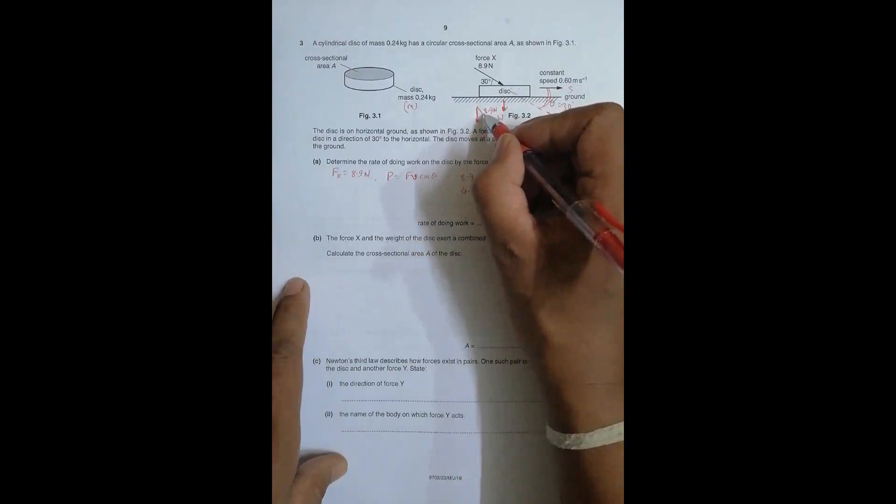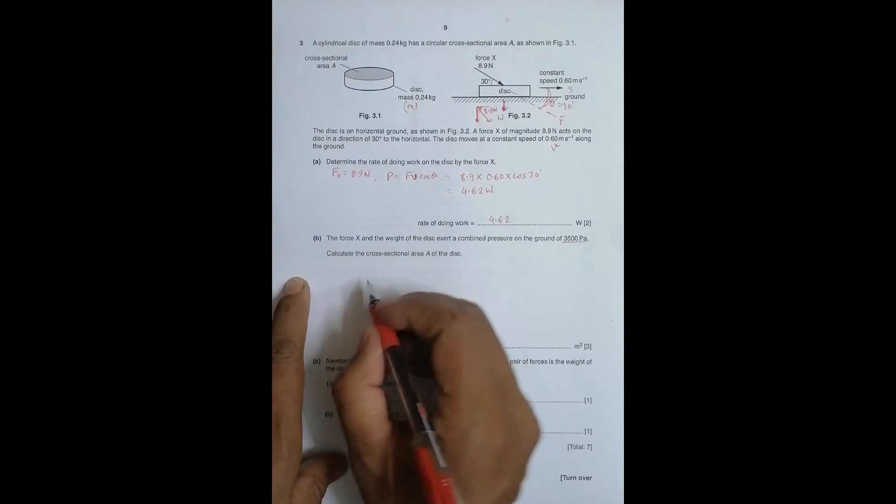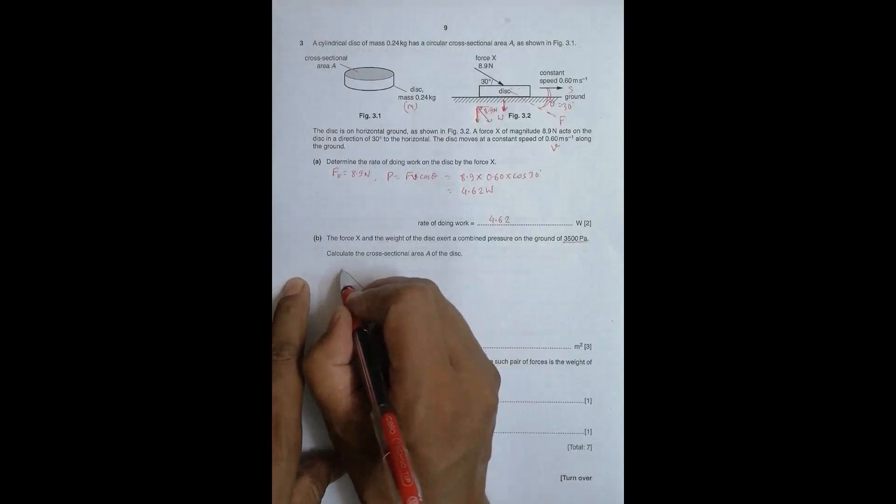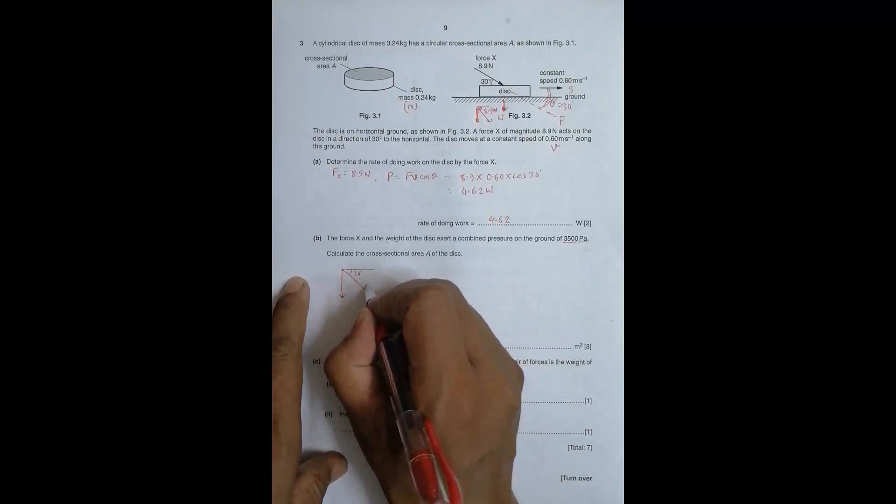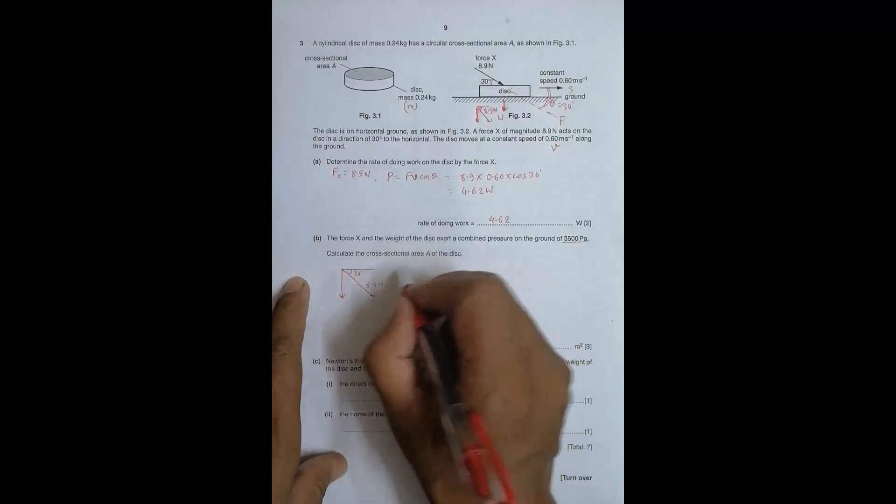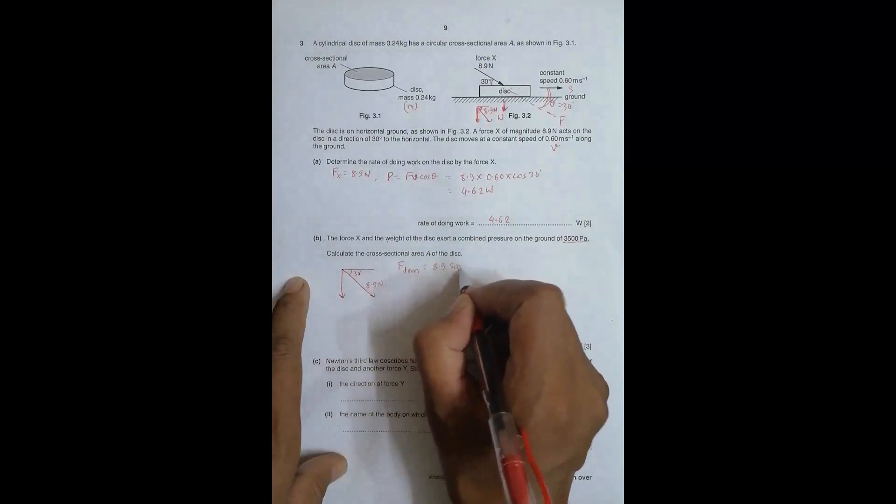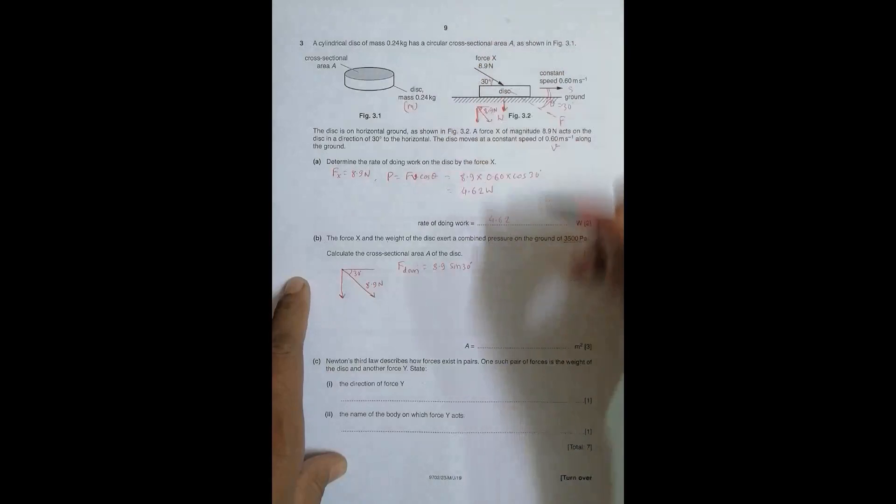This is 8.9 N. Let me draw it here - this is force X. We are given this angle of 30 degrees, so I have to find this component, the downward component. So this force downward due to X = 8.9 × sin 30 degrees. Here it is cos 30, and here it should be sin 30.